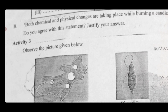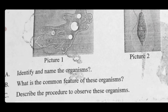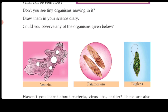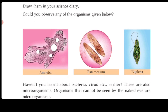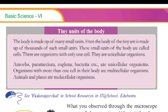Activity Three: observe the picture given below. Identify the name of picture one and picture two — identify the organism from textbook page number 9. The first one is Amoeba and the second one is Euglena. What is the common feature of these organisms? Amoeba, Paramecium, Euglena, Bacteria, etc. are unicellular organisms — that is what they have in common.